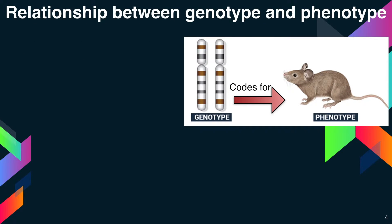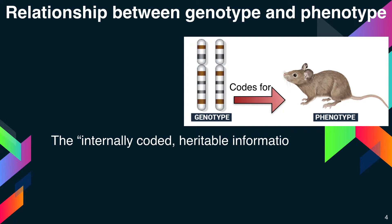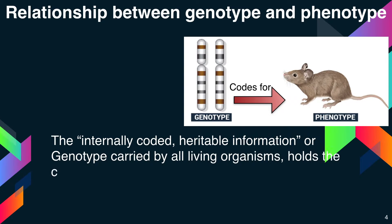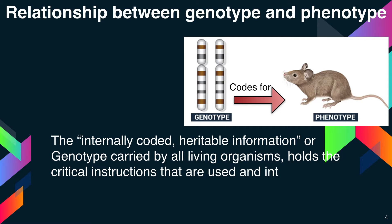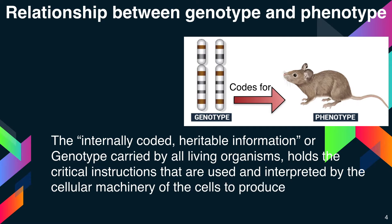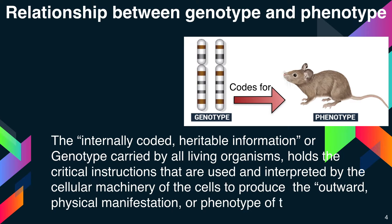Coming to the relationship between a genotype and a phenotype — the relationship is a simple one. The genotype codes for the phenotype. The internally coded, inheritable information or genotype carried by all living organisms holds the critical instructions that are used and interpreted by the cellular machinery of the cells to produce the outward physical manifestation, or phenotype, of the organisms.